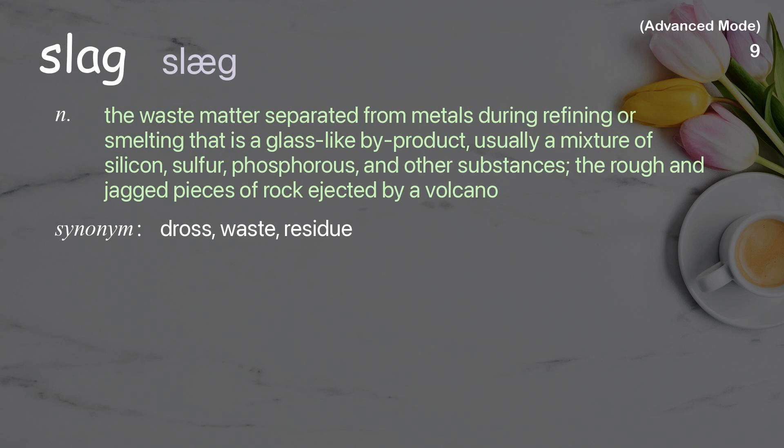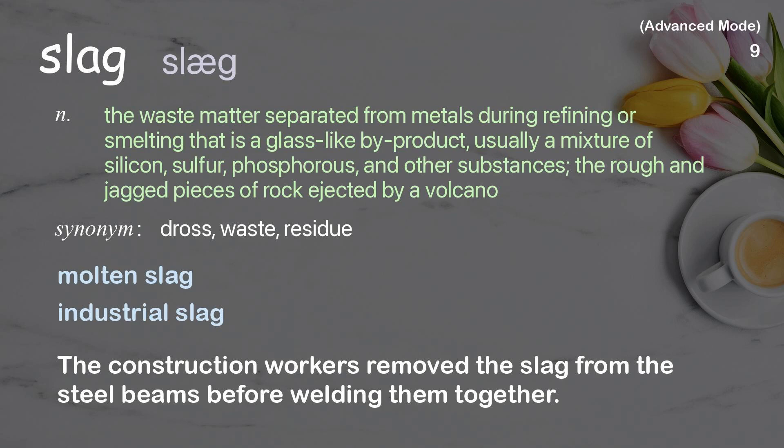Slag: the waste matter separated from metals during refining or smelting, that is a glass-like byproduct usually a mixture of silicon, sulfur, phosphorus, and other substances; also the rough and jagged pieces of rock ejected by a volcano. Examples: molten slag, industrial slag. The construction workers removed the slag from the steel beams before welding them together.